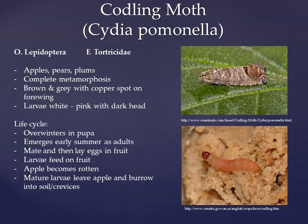This species overwinters in cocoons that can be found beneath the soil, under bark, or in the cracks and crevices of trees. The new adults emerge from their cocoons throughout May and June. Mating occurs, and then females lay a single egg on each new fruit or on a leaf near the fruit. After about 10 days, the larvae will hatch and break through the skin of the apple and begin to burrow to the core to eat the seeds. They will spend approximately three weeks on the apple feeding, and then will exit the apple to find a place to enter its pupal stage for the winter.